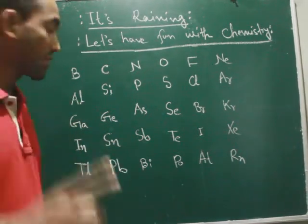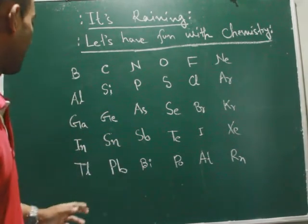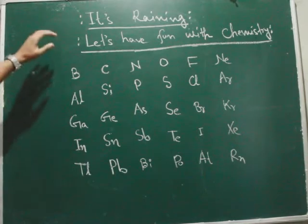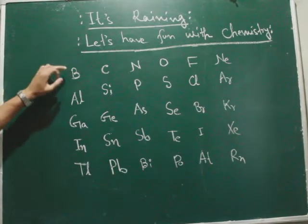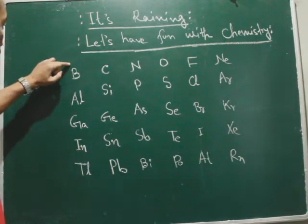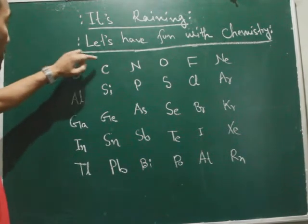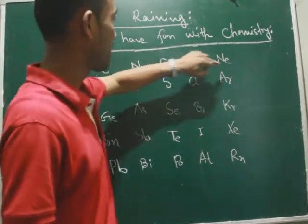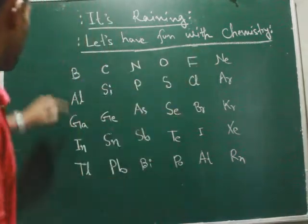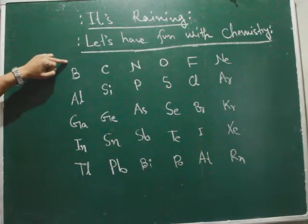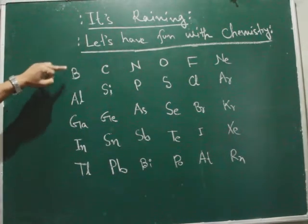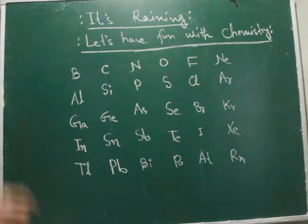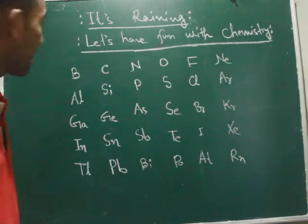Let's start. Now, Group Number 13, 14, 15, 16, 17, 18. So Group Number 13 — the group elements are: Boron, Aluminium, Gallium, Indium, Thallium.